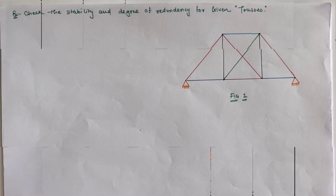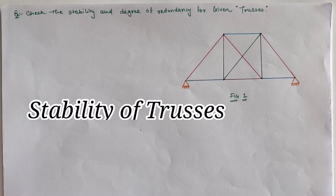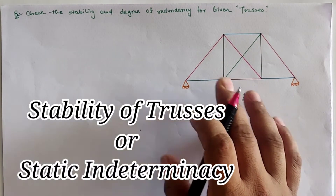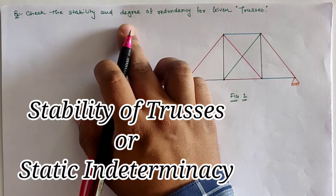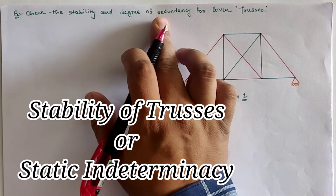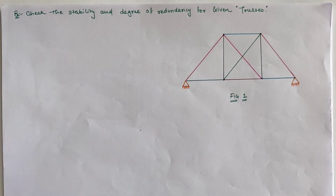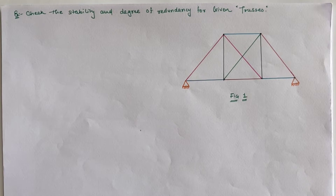Hello friends, today we are going to check the stability of a given truss, or we can say the degree of redundancy. We are taking three different examples of the truss, in which figure number one indicates one simple truss.